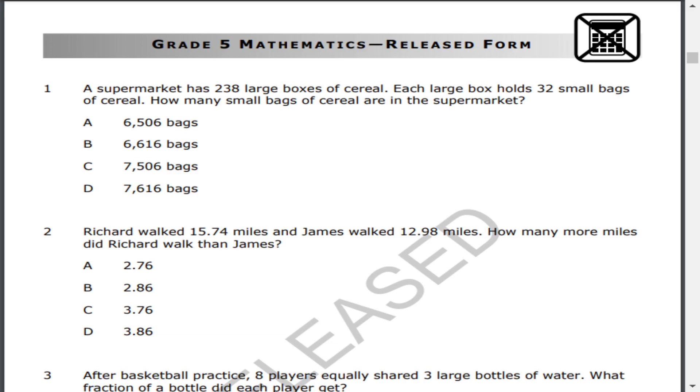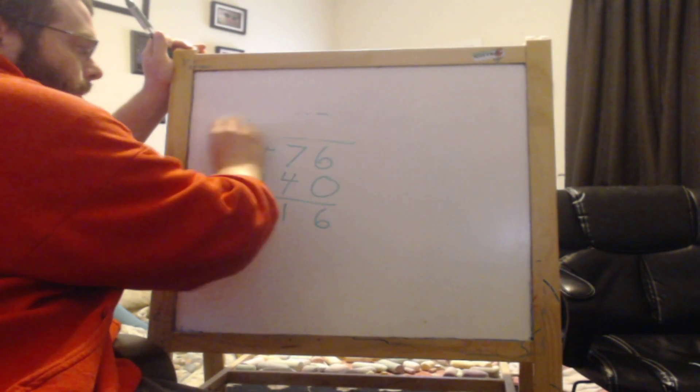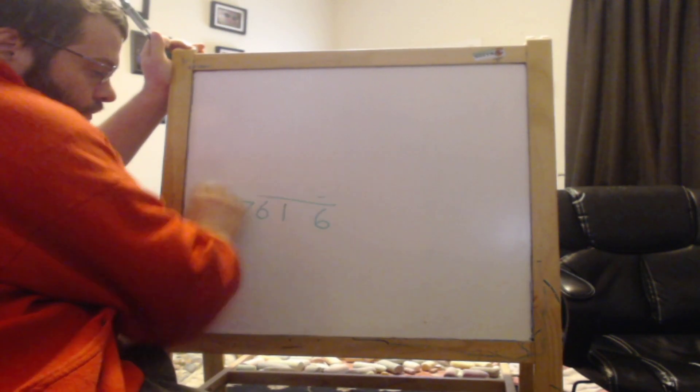Let's double check by using a different strategy. All right. Now another method we can use is the window method, the box method, however you want to call it.